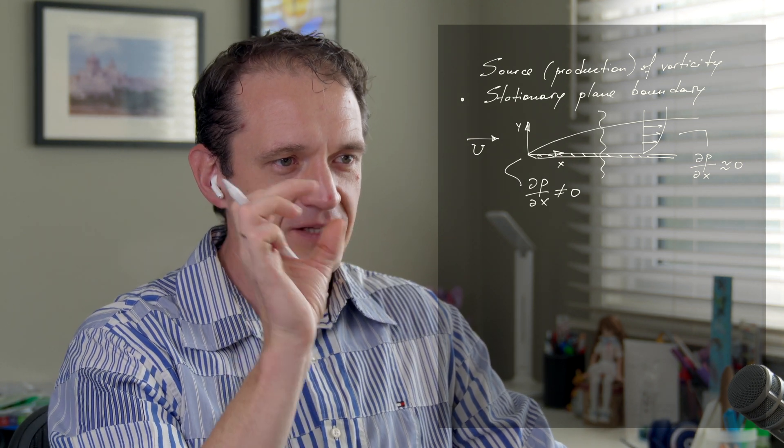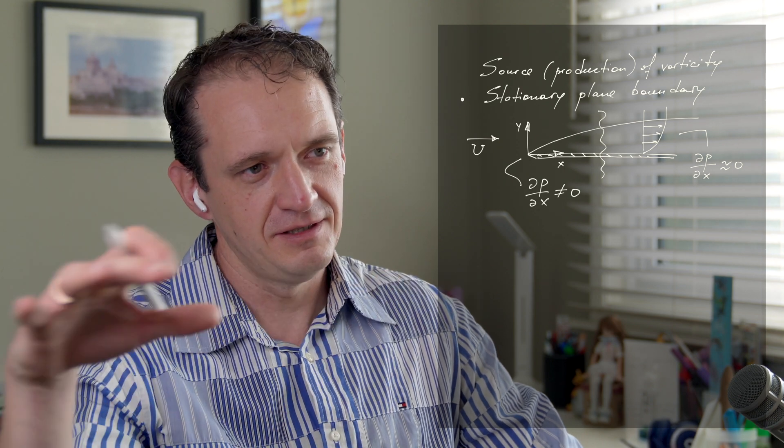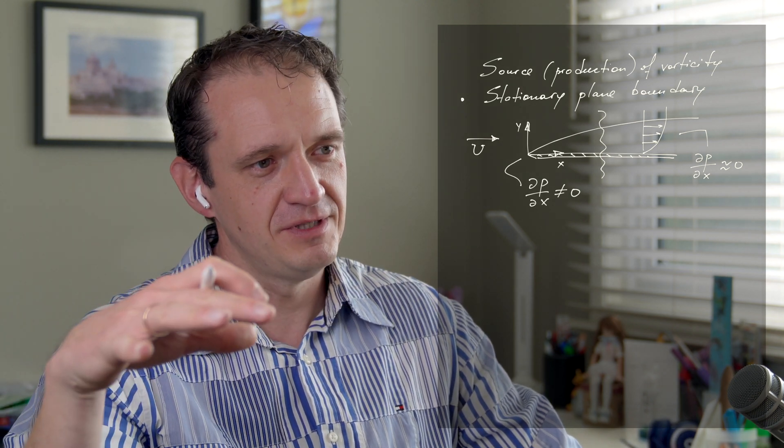The pressure gradient in this region is not equal to zero, so the whole boundary layer theory actually doesn't work in the vicinity of the leading edge. There are large interactions between the plate and the flow. When we talk about boundary layer theory and all these mechanisms of vorticity transport, we are actually considering the region away from the leading edge.